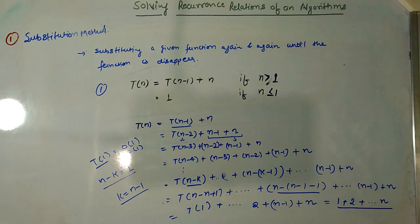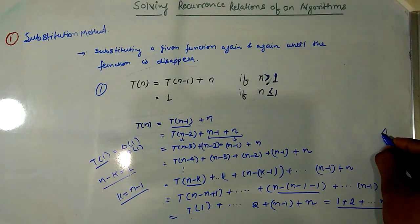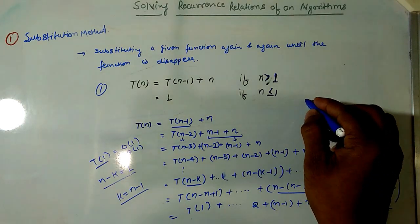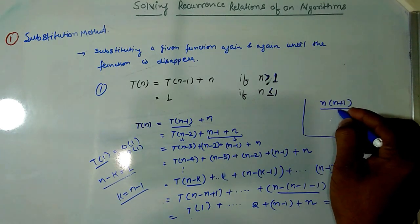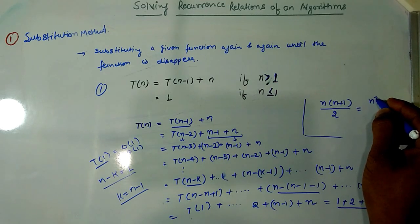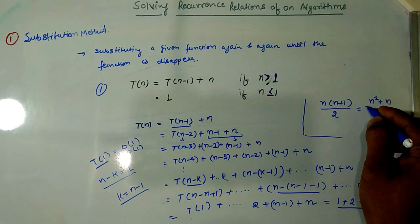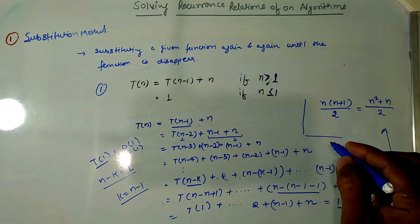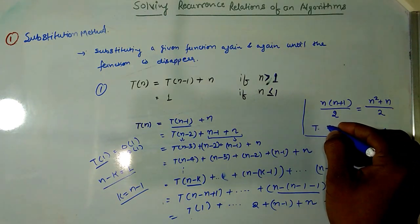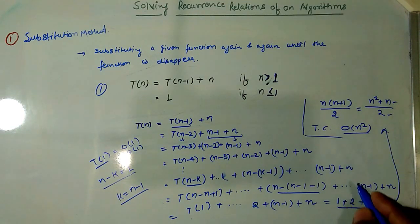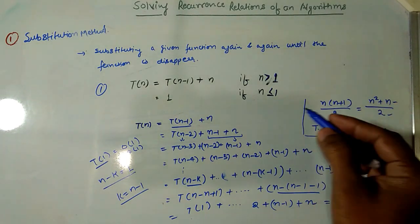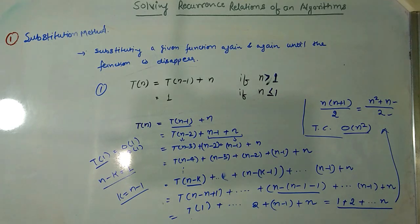The summation of the first n natural numbers is n(n+1)/2, or (n² + n)/2. So the time complexity of this relation is O(n²) because we ignore the lower order terms. This is how we solve the recurrence relation using the substitution method. Let's solve another example.